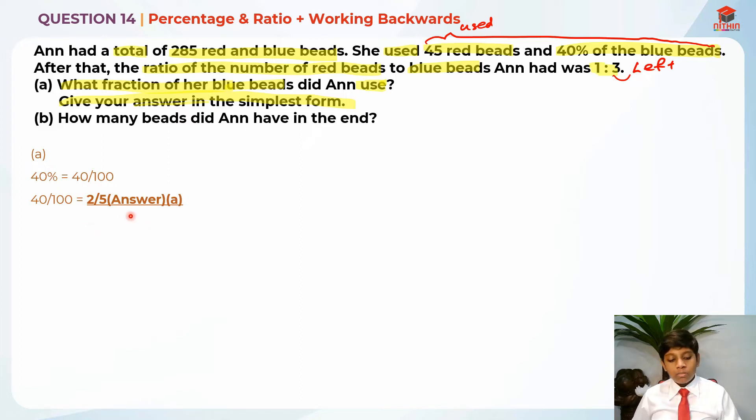Now let's move on to part B. Let's read for part B first. How many beads did Ann have in the end? They're asking us the number of beads in the end. In the end is basically 1 is to 3, right? So it's basically 4 units.